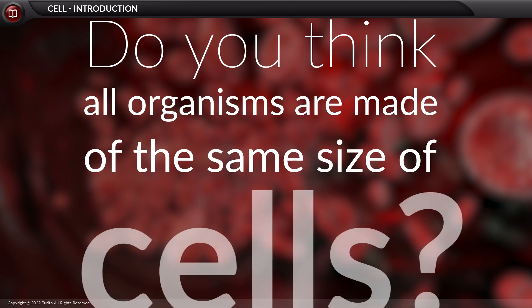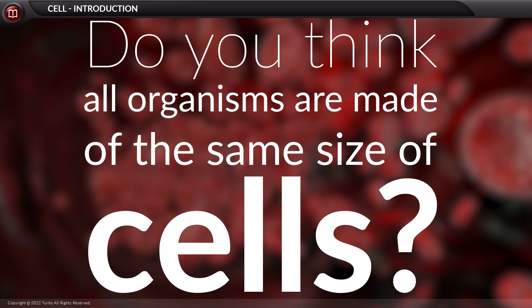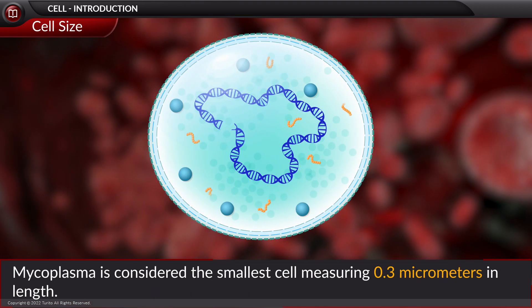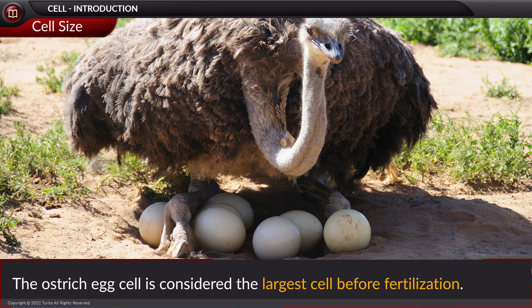Do you think all organisms are made of the same size of cells? The cells vary greatly in size. For example, mycoplasma is considered the smallest cell, measuring 0.3 micrometers in length. In comparison, the ostrich egg cell is considered the largest cell before fertilization.